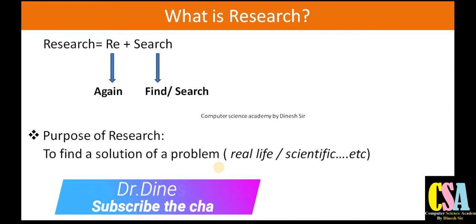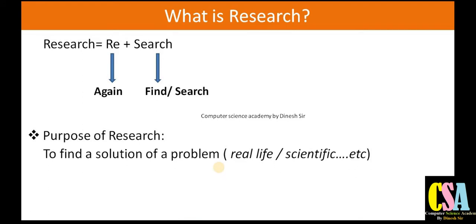Now, what is the purpose and objective of research? In a single statement, we can say the purpose of research is to find a solution to a problem. Problems may be real-life situations, scientific problems, or education-related issues. There are so many problems available, and each and every sector will have different types of scientific or research areas. We need a perception and observation towards a particular problem.